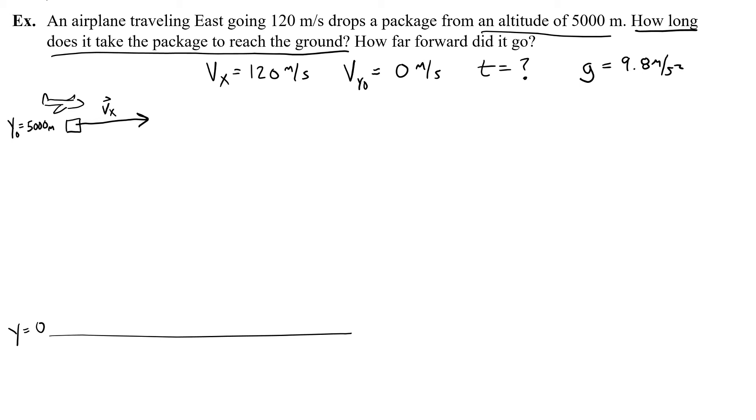So I have in the y motion category, vy0, t, 9.8, y, and y0. So what I might do to try and organize all of this information is I might make a little x and y box. I'm going to put all of this y stuff in the y side and all the x stuff on the x side.